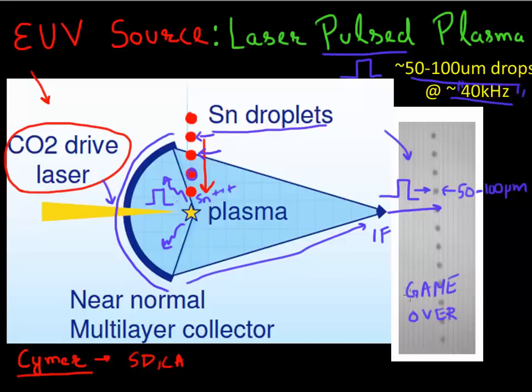Another challenge is, once you have these tin droplets, there's a lot of tin which ionizes. There's debris. Another problem is collecting this debris of tin. There's a challenge that what if this tin falls on this mirror or it falls on some of the optical components over here. And that's another challenge with this technology.